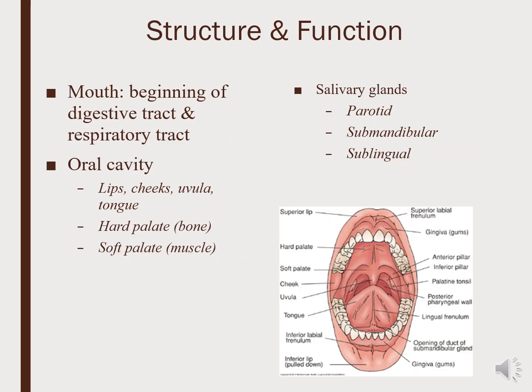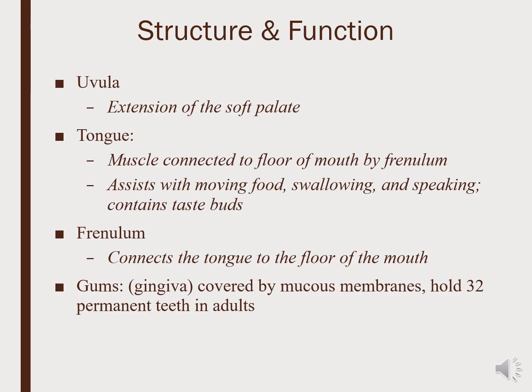The mouth is the beginning of the digestive and respiratory tract. The oral cavity includes the lips, cheeks, the uvula, and tongue, the hard palate, and the soft palate. The hard palate is in the front of the roof of the mouth, and the soft palate is in the back. There are also salivary glands to help process food. The uvula is an extension of the soft palate in the back. The tongue is the muscle connected to the floor of the mouth by the frenulum, and the gums are covered by mucous membranes holding the teeth in place.